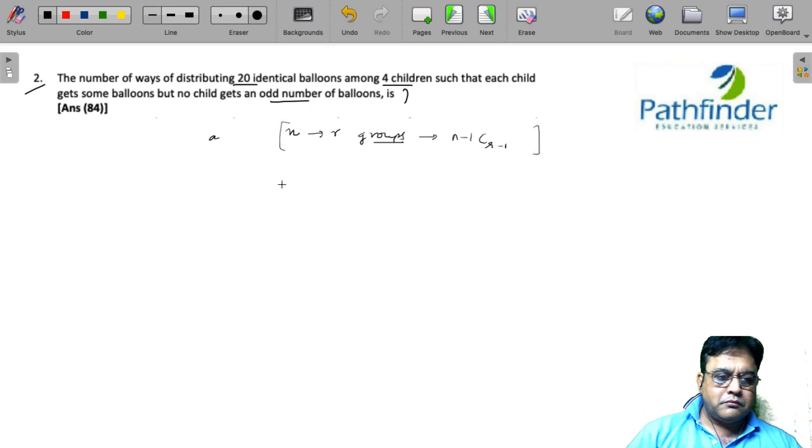Now we have four children. Let's say the number of balls with each of them is 2a + 2b + 2c + 2d, and this equals 20. Why 2a, 2b, 2c, 2d? Because each child gets some balloons and nobody gets an odd number of balloons, so 2a, 2b, 2c, and 2d are even numbers, which means a + b + c + d equals 10.